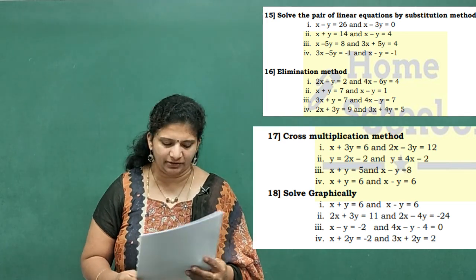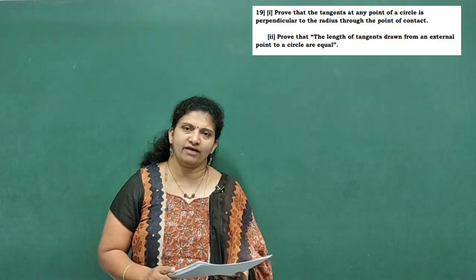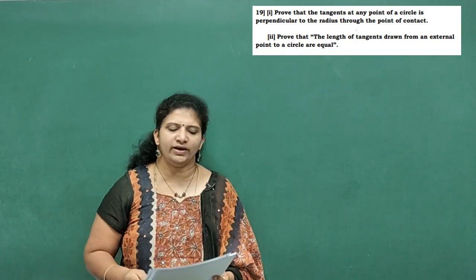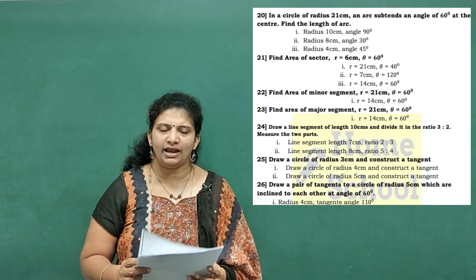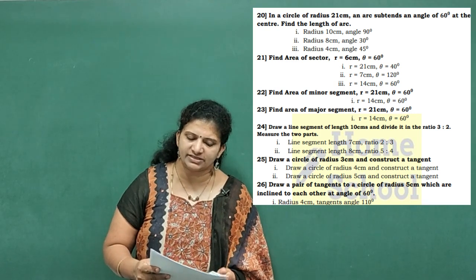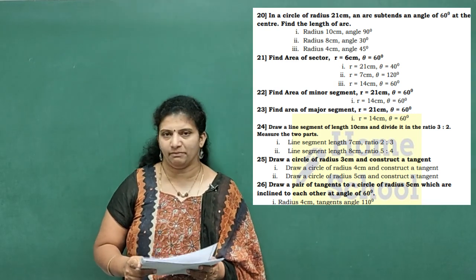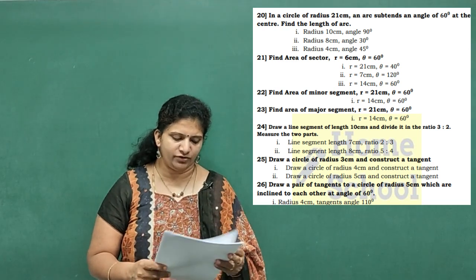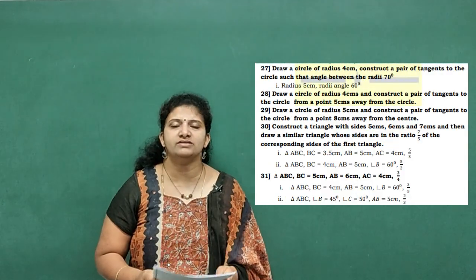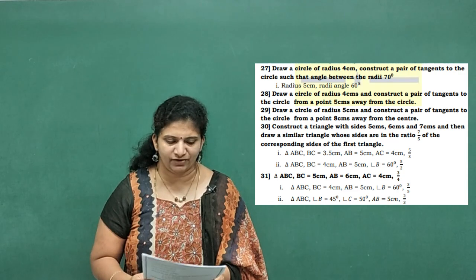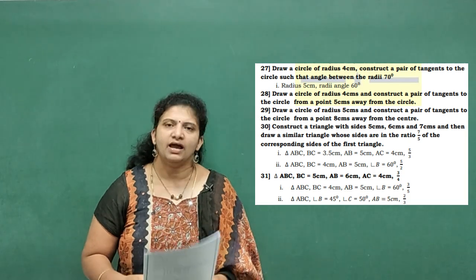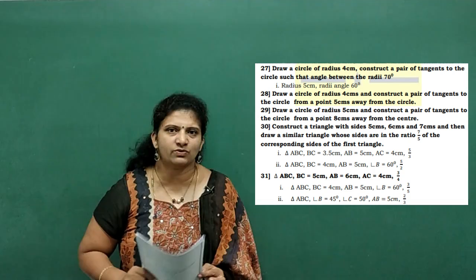Coming to problem 19 — two theorems from Circles, one is compulsory. Problem 20: radius and angle given, find the length of the arc. Problem 21: area of a sector. Problem 22: area of a minor segment. Problem 23: area of a major segment. Problem 24 onwards up to 31 — all construction-based problems. These questions have been picked from the past 10 years and most expected questions.